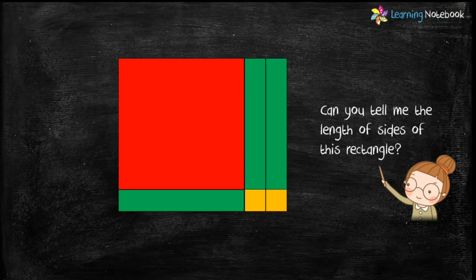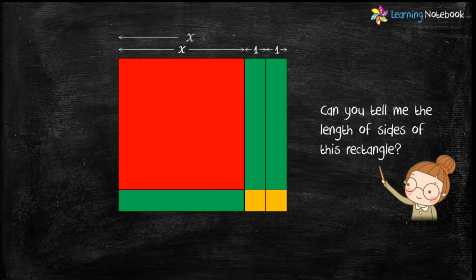Yes, one side of the red square is x and one side of the green rectangle is 1. Therefore one side of the big rectangle is x plus 1 plus 1 which equals x plus 2.